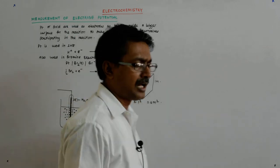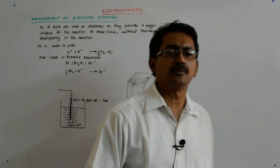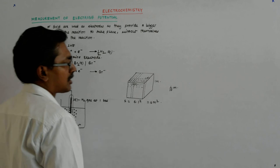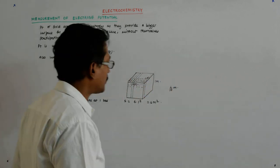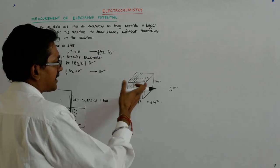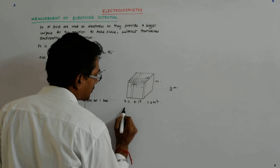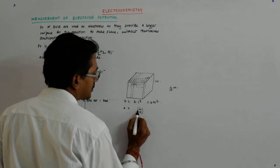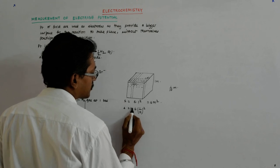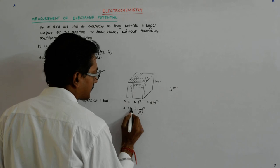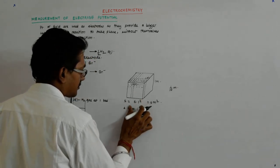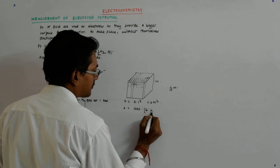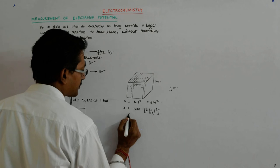So what will happen? You'll get a thousand cubes each of side one tenth meter, because one meter has got cut into ten. So what is the total surface area of the small cubes? It is one by ten square into six into thousand, because there are thousand cubes each having area of this. So it is actually giving me 60 meters square.